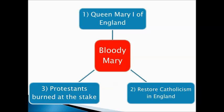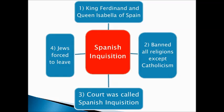We also get a Queen of England known as Bloody Mary — Queen Mary I. She wanted to restore the Catholic faith in England, and anyone who was Protestant she burned at the stake, trying to bring Catholicism back to England. Finally, we get the Spanish Inquisition. King Ferdinand and Queen Isabel of Spain started a court that did not allow any religion except Catholicism — no Muslims, no Jews, no Protestants. This court was called the Spanish Inquisition. The life of Protestants was made miserable, Muslims were forced out of Spain, and Jews were also forced to leave Spain.